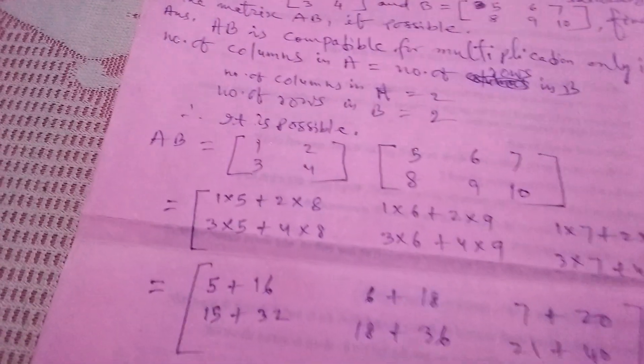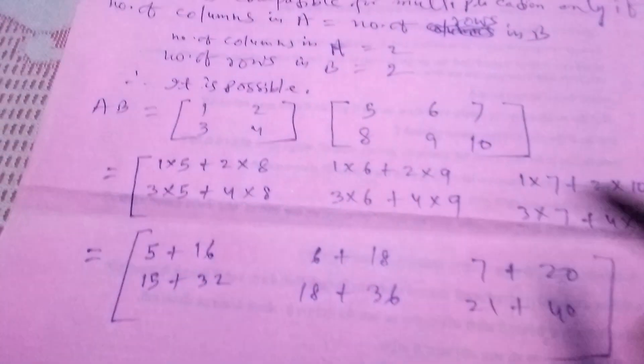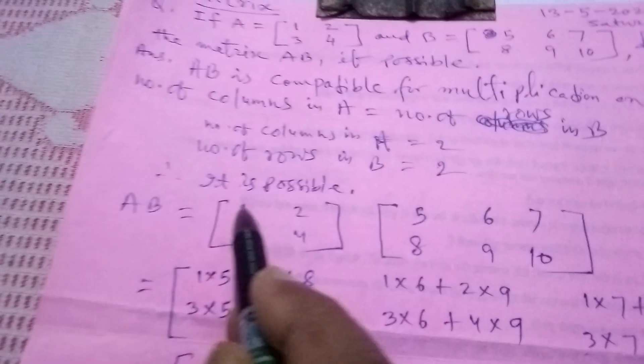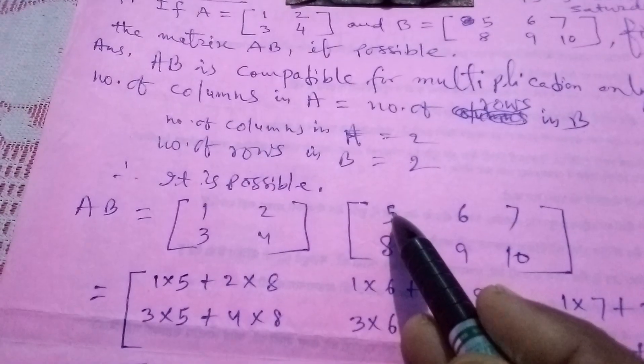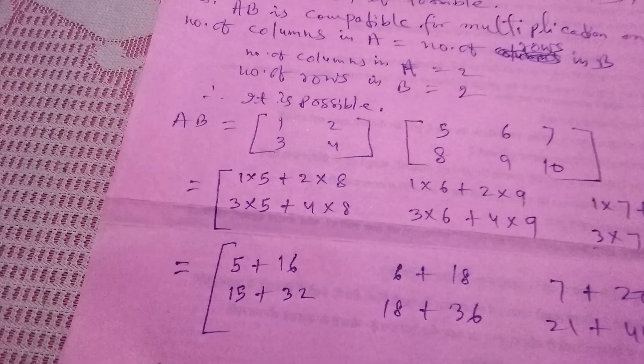One thing you will always keep in mind: these two numbers will be the same because 1 into 5 and then 2 into 8 we have done, and the same rule we will follow with all the numbers.